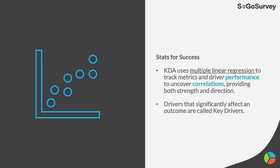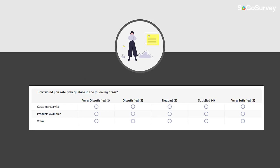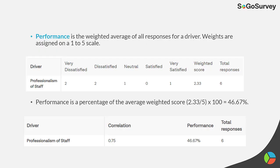Drivers that significantly affect an outcome are called Key Drivers. As you can see in this example, performance is the weighted average of all responses for a driver. Weights are assigned on a 1 to 5 scale, and performance is a percentage of the average weighted score multiplied by 100.